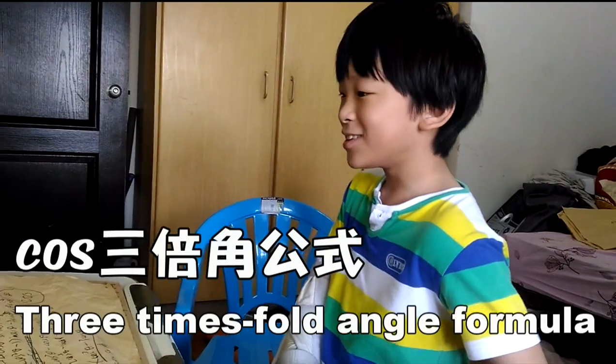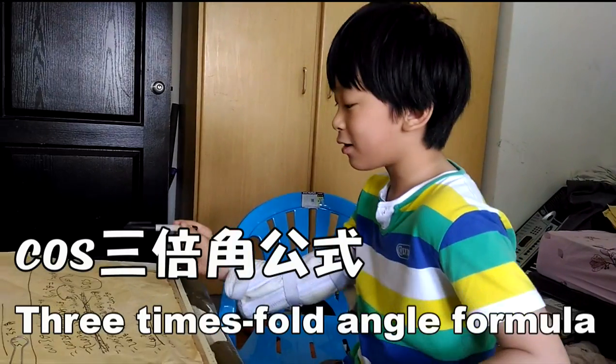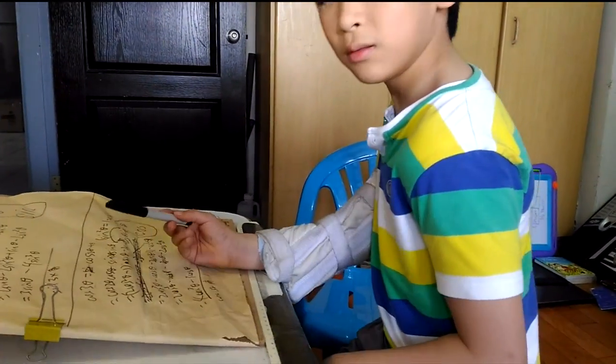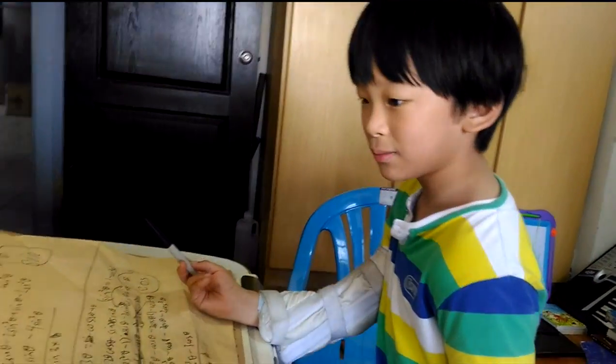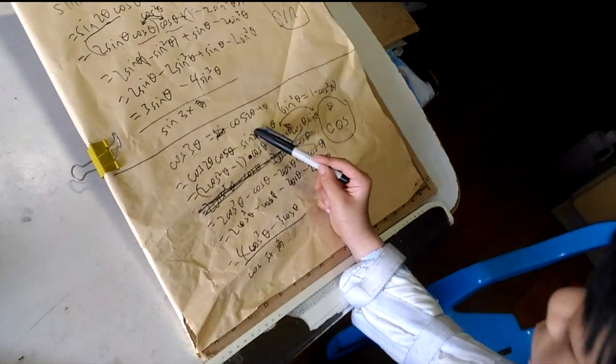So, this is the three times fold angle formula of cosine. We now have cosine of 3θ. We can write this as 2θ plus θ.